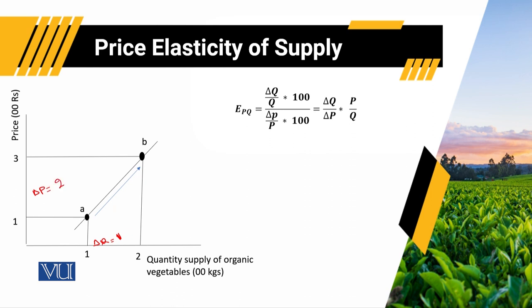At point B, price is equal to 3 while at point A price is equal to 1. So change in price between these two points is equal to 2. If we compute price elasticity of supply with reference to point A, price against point A is equal to 1 and quantity against that price is also equal to 1. So price elasticity of supply is equal to 0.5.